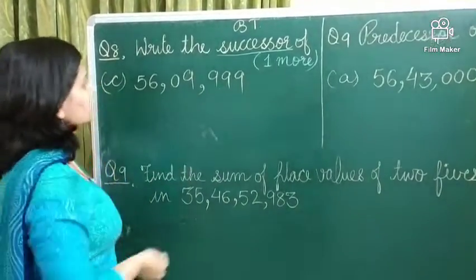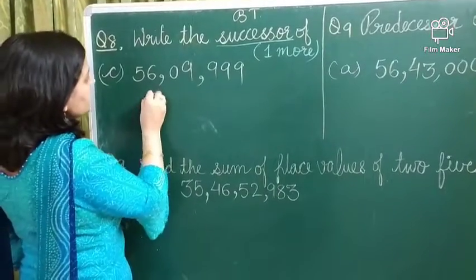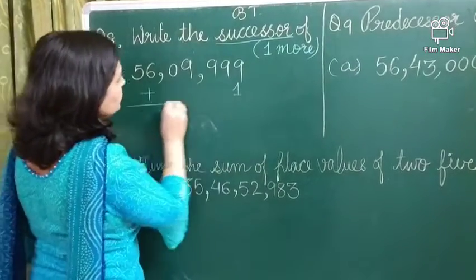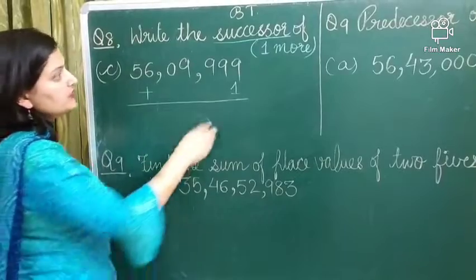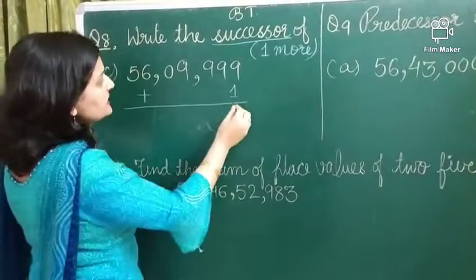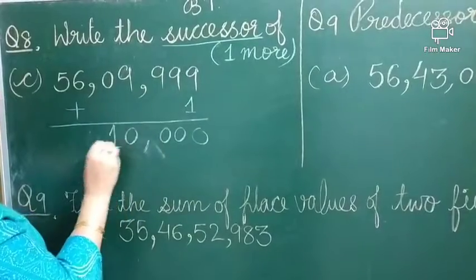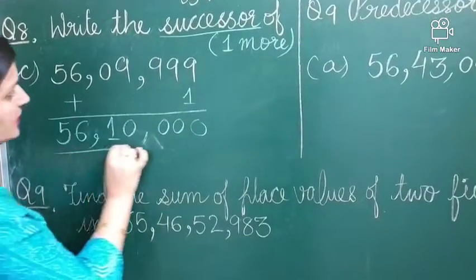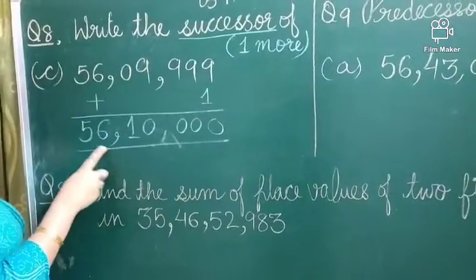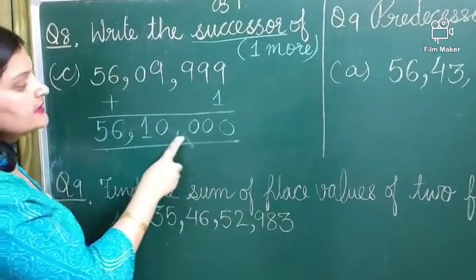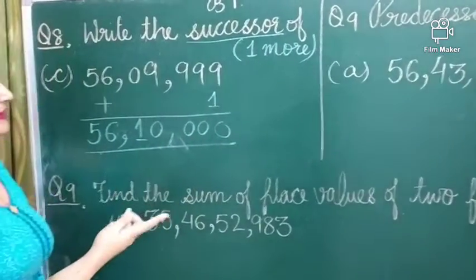So, what do we do? One more means, we will add 1 to this number. And when we add 1 to this number, we will get our successor. So, when I have added 1 to this number, the successor of this number is 56,10,000. Similarly, predecessor.